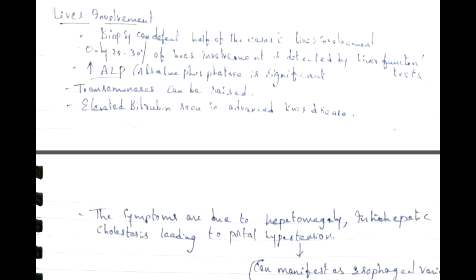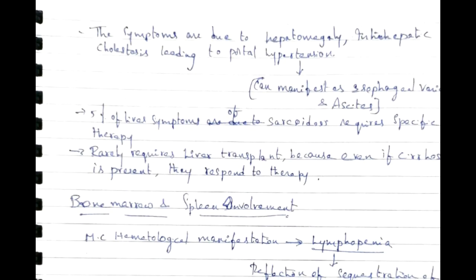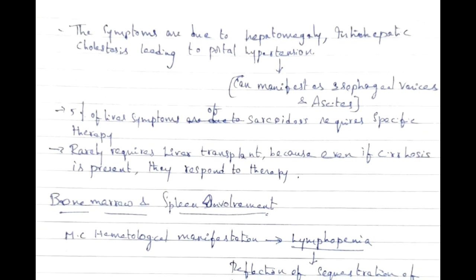Liver biopsy can detect half the cases with liver involvement; only 20–30% are detected by liver function tests. Increased alkaline phosphatase is significant; transaminases can be raised; elevated bilirubin is seen in advanced liver disease. Symptoms arise from hepatomegaly and intrahepatic cholestasis leading to portal hypertension, manifesting as esophageal varices and ascites. Notably, 5% of liver sarcoidosis require specific therapy, and even cirrhosis may respond to steroid therapy — unlike most other causes of cirrhosis.